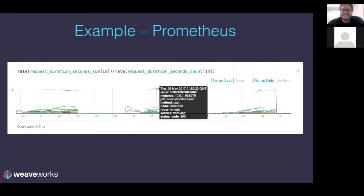Question from chat: what logging platform does Weaveworks use? We don't provide a logging platform in Weave Cloud. I believe we ourselves use Loggly — so we're a customer of Loggly — but there are lots of other logging platforms and I don't feel you have to use that one. Another question: what overhead does Weave Cloud add? Not much — we deploy some agents on your machines, but they're designed to use minimal CPU and memory.